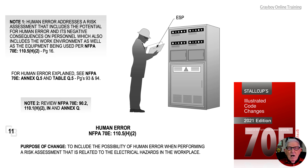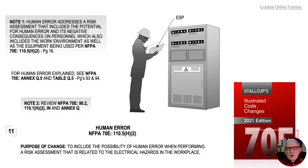For human error to be explained to where one understands what the 70E document is requiring, review C70E Annex Q5 and Table Q.5 on pages 93 and 94. If you review this in detail, you'll understand exactly what human error is all about and why this revision took place.